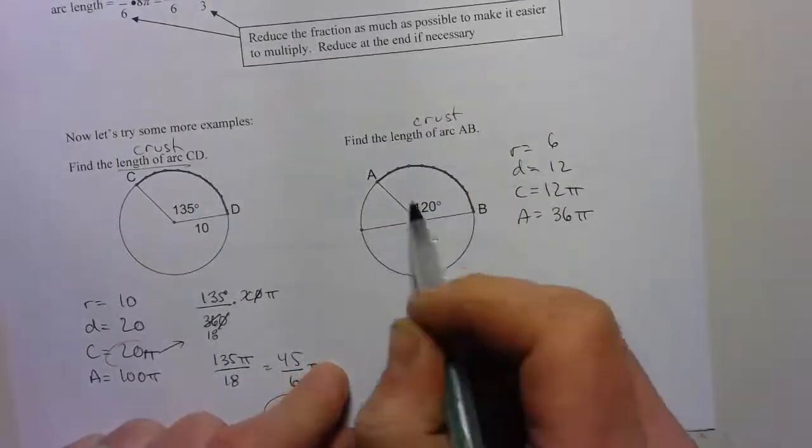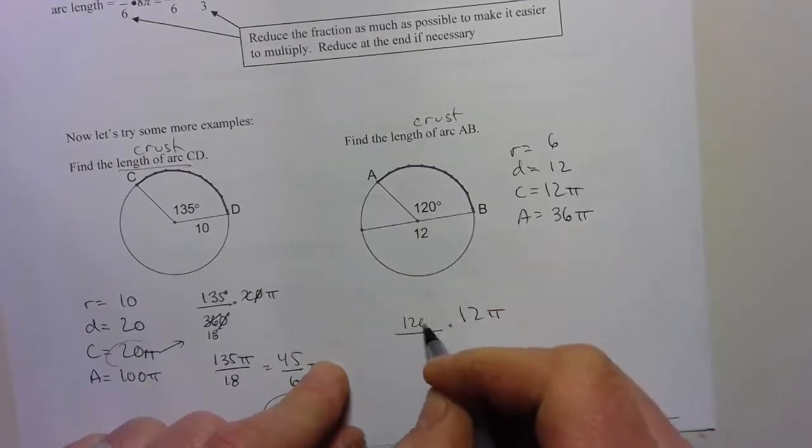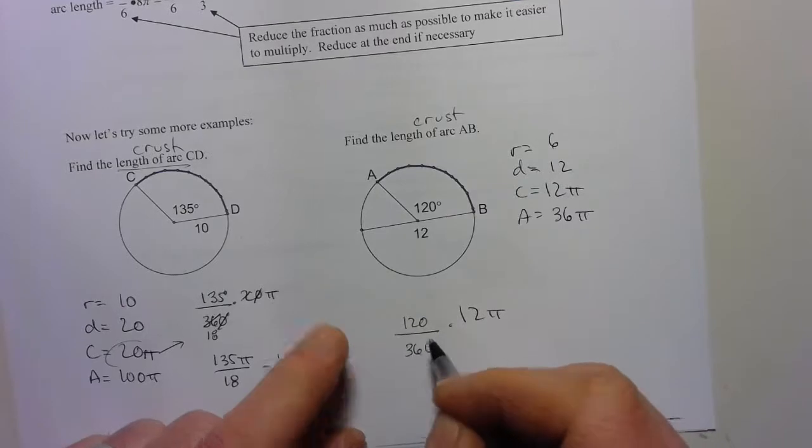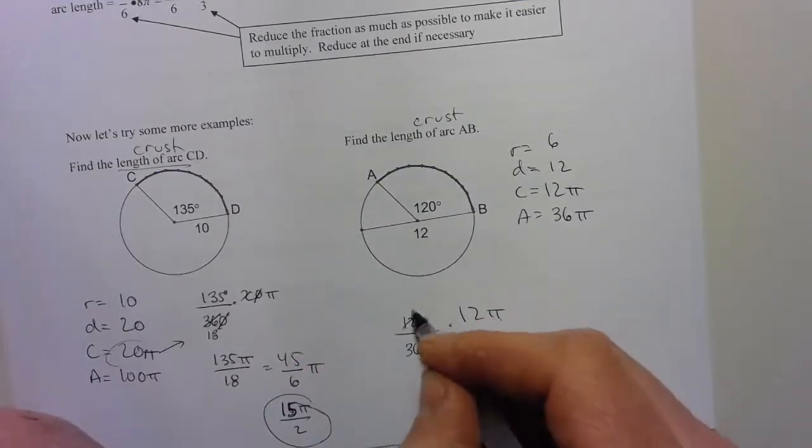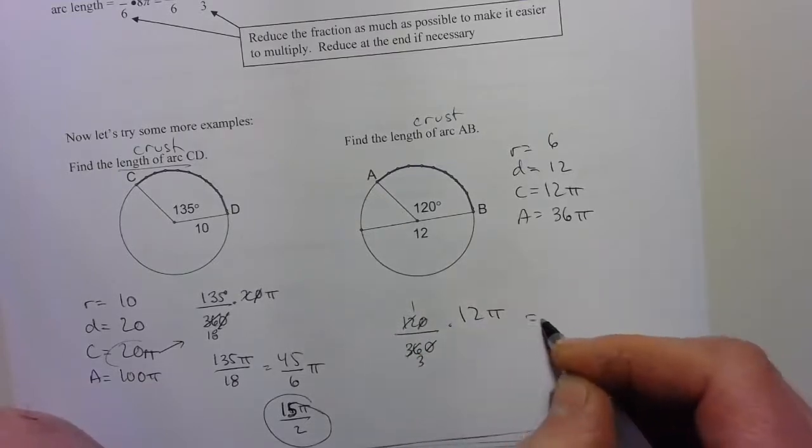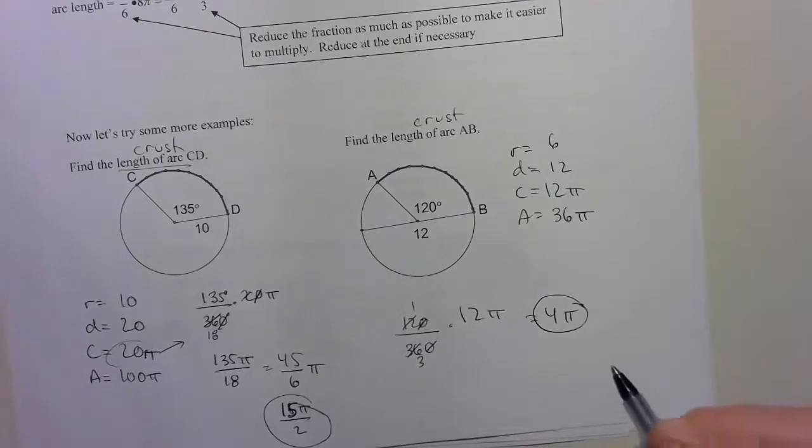How much of the circumference do I have? Well, that's highlighted, that's 120 out of 360. Always out of 360. Reduces down to 1 third. 12 divided by 3 is 4. Just tack on the pi. I get 4 pi there.